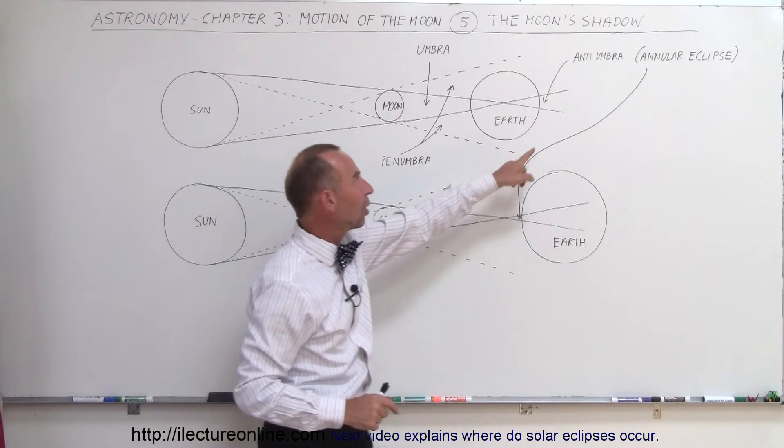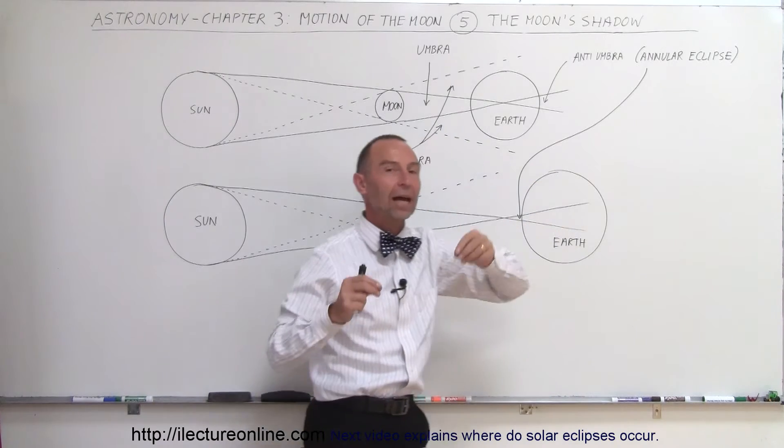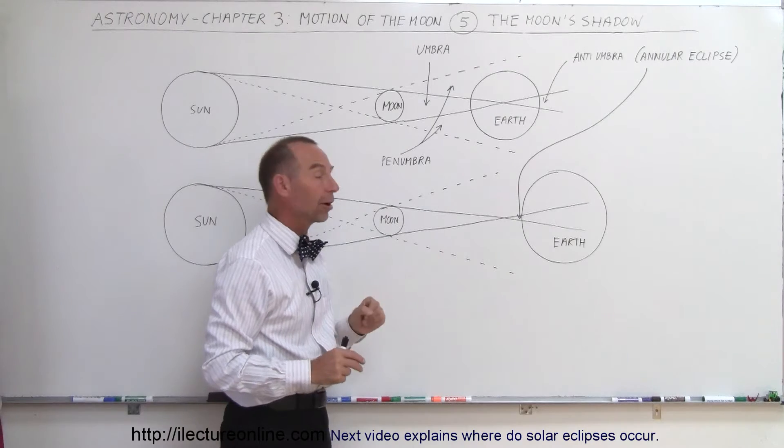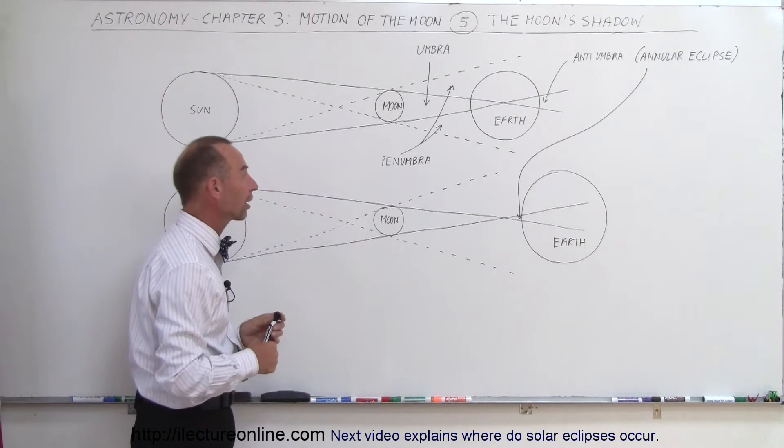This region right here is called the anti-umbra. You can actually see the sun, at least a portion of the sun there. So it's actually not completely dark. It is partially dark, but not completely dark.